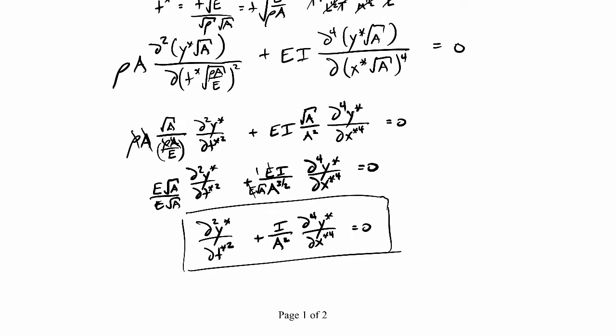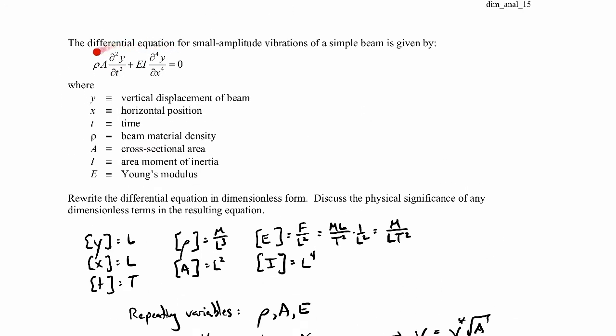That equation should now be dimensionless. Certainly the first term is dimensionless because y* and t* are dimensionless. In the second term, y* and x* are dimensionless, and I has dimensions of length to the fourth while A squared is also length to the fourth, so I/A² is dimensionless. This I over A squared is just a dimensionless geometric parameter describing the cross-sectional shape of the beam. That's the original equation but in a dimensionless form.